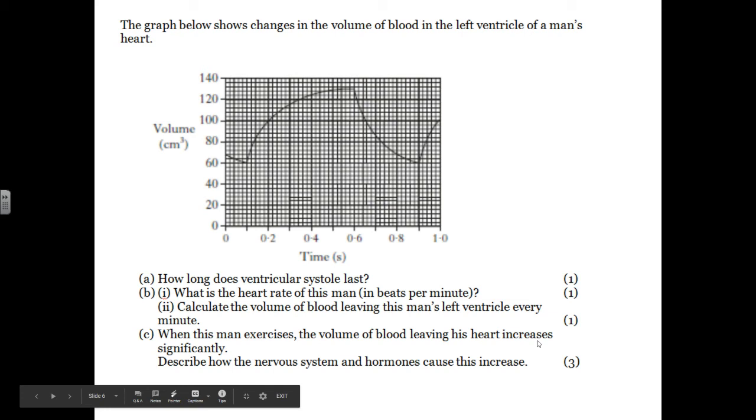When this man exercises, the blood volume leaving his heart increases significantly. Describe how the nervous system and hormones cause this increase. So that would be the autonomic nervous system would increase the number of sympathetic neural impulses, which would increase the concentration of the excitatory noradrenaline crossing the synapse, which would cause the sinoatrial node to fire faster. Because the parasympathetic system is not increasing its neural impulses, there's no more acetylcholine being made, so your pulse would go up.